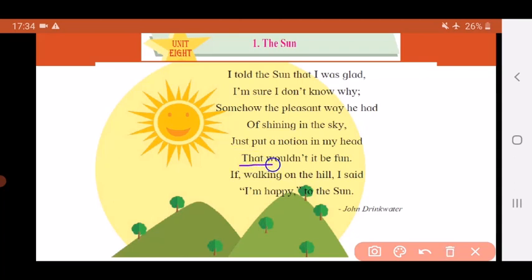That wouldn't it be fun? If walking on the hill I said, I'm happy to the sun. So what was that thought or idea that came in the poet's head? That won't it be fun if when I'm walking up this hill, I look at the sun and tell the sun, I'm happy.